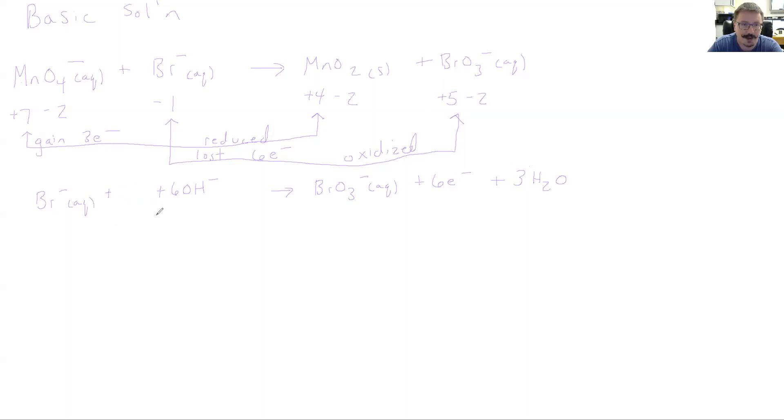Now if we look at it, it should balance. I've got six oxygens, six hydrogens, electrons, everything. So this is what that half reaction should look like balanced in a basic solution.